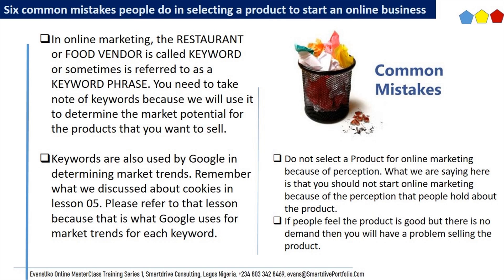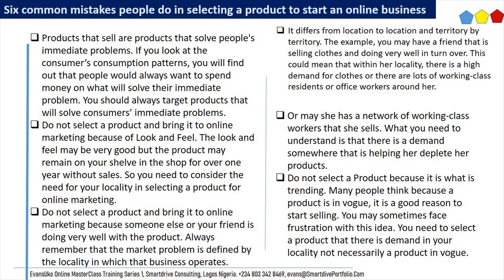Mistake 3: Do not select a product for online marketing because of perception. You should not start online marketing because of the perception that people hold about the product. If people feel the product is good but there is no demand, then you will have a problem selling the product. Products that sell are products that solve people's immediate problems. If you look at consumer consumption patterns, you will find that people always want to spend money on what will solve their immediate problem. You should always target products that will solve consumers' immediate problems.